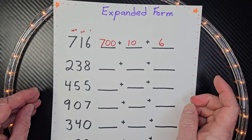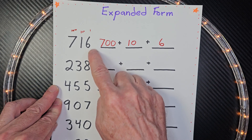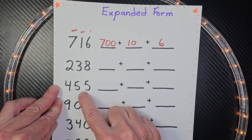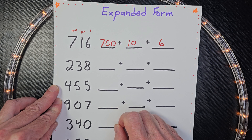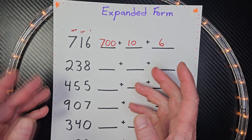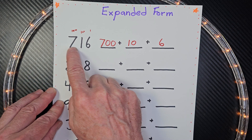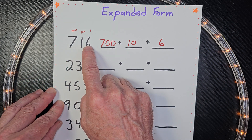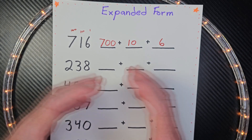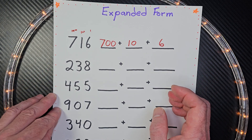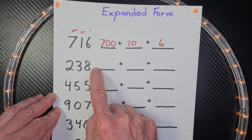Hey, welcome to the show, my friends. Today we're going to express these numbers right here in expanded form. When we do this, we always start from the left and move to the right. Then we will expand out the number to show the value of each of these digits.